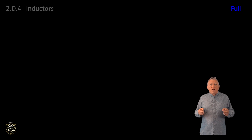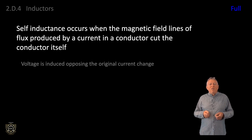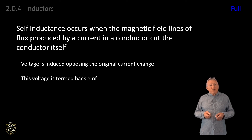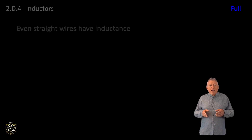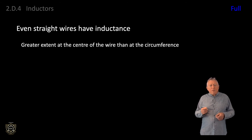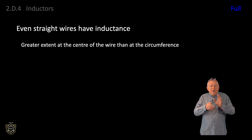Self-inductance occurs when the magnetic field lines of flux produced by a current in a conductor cut the conductor itself, causing a voltage to be induced opposing the original current change. This voltage is termed back EMF. Even straight wires have inductance — the moving magnetic field generated by an AC source cuts the wire itself. This happens to a greater extent at the centre of the wire than at the circumference, resulting in more back EMF at the centre than at the surface of the wire.